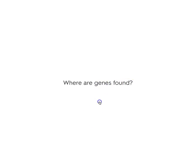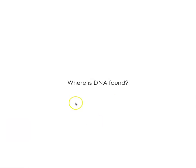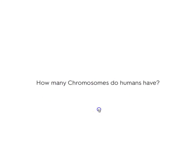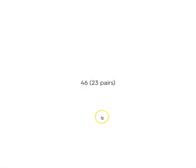Where are genes found? In the DNA molecule. Where is DNA found? In the nucleus of every cell. How many chromosomes do humans have? 46 — 23 pairs.